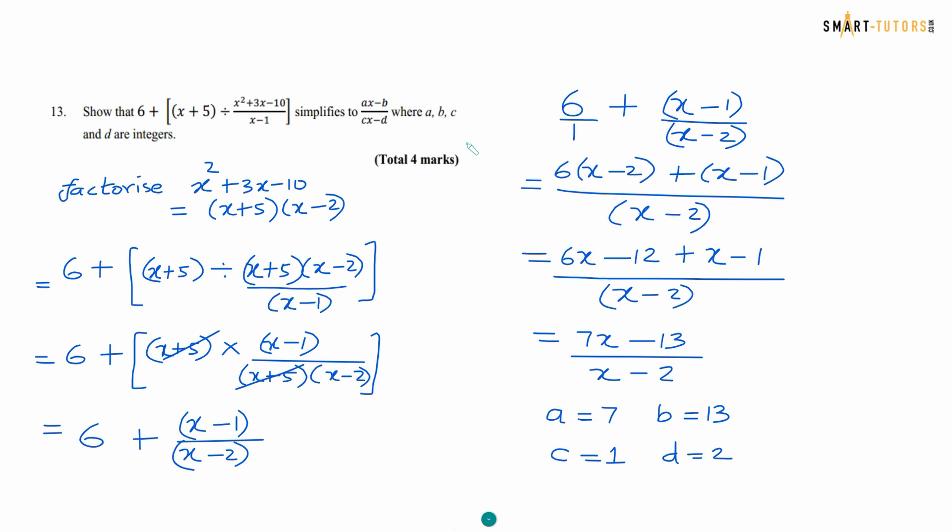Question number 13 is algebraic fractions. So the difficulty here is just to see the question is very hard by looking at the questions from starting from 6 until this fraction here. So if you cut this into small parts, first factorize the x squared plus 3x minus 10. That easily come up as x plus 5 x minus 2. Then division turning to a multiplication. When you divide, change to multiplication, you flip. So x minus 1 goes up, x plus 5 x minus 2 come down.